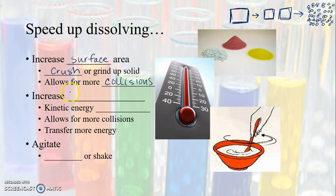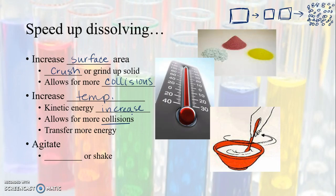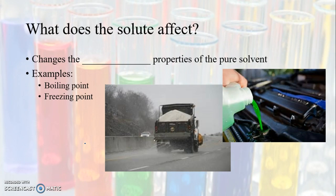Another way to speed up dissolving is to increase the temperature. As temperature increases, kinetic energy increases, molecules move faster, allowing for more collisions and more energy transfer — meaning more dissolving. The third way is to agitate the solution — stir it or shake it — which also speeds up the rate of dissolving.